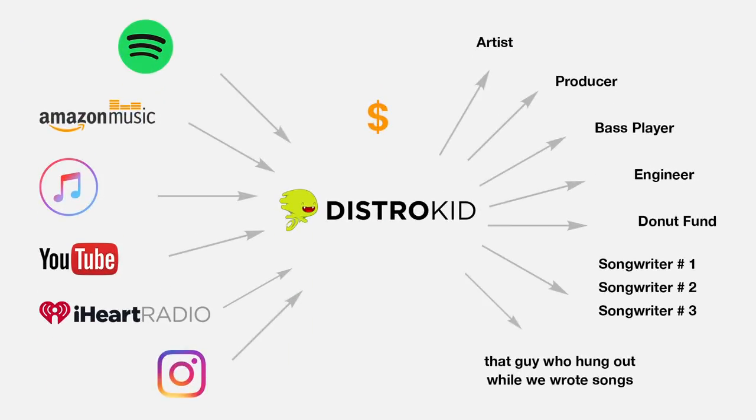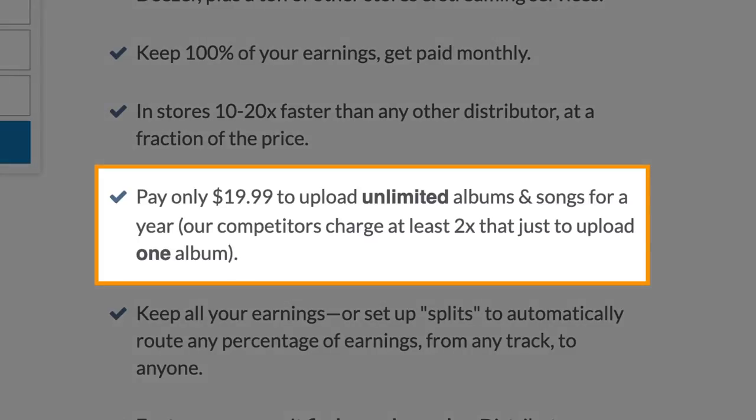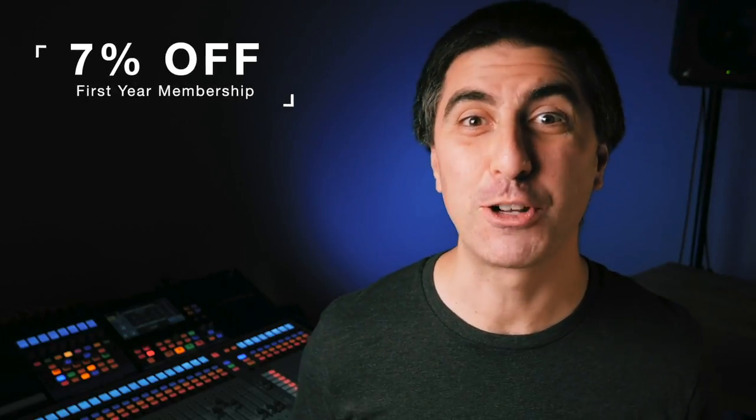My favorite part about DistroKid is they'll pay whomever whatever you decide from the proceeds of any song. So if you hire a producer or an engineer to come in but you can't pay them their full rate, you can pay them some on the back end. DistroKid has you set up. The pricing is also really simple — it's $19.99 a year for unlimited uploads of unlimited songs. A lot of other services will charge money on the back end, so unless you're making less than $200 to $400 a year, DistroKid is a way better deal. You can check it out through the link in the description below, and if you use my link, you'll get 7% off your first year's membership.